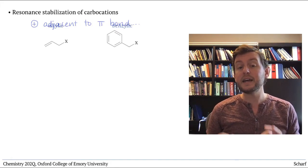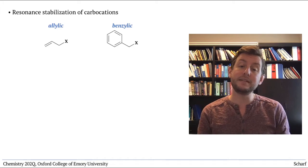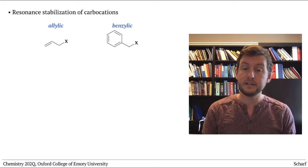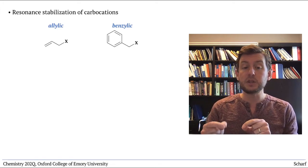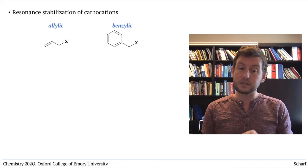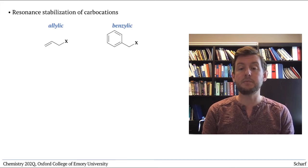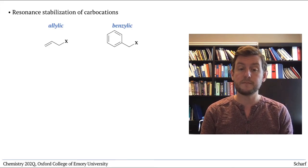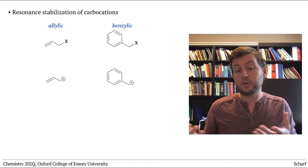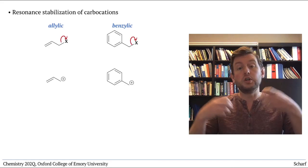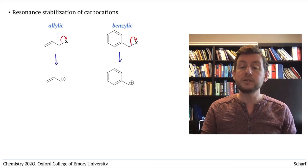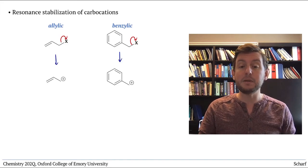This means that allylic and benzylic halides—those on the sp3 carbons adjacent to alkenes or benzene rings—are especially susceptible to SN1 substitutions. If and when the leaving group just leaves, the resulting carbocation is stabilized by resonance.